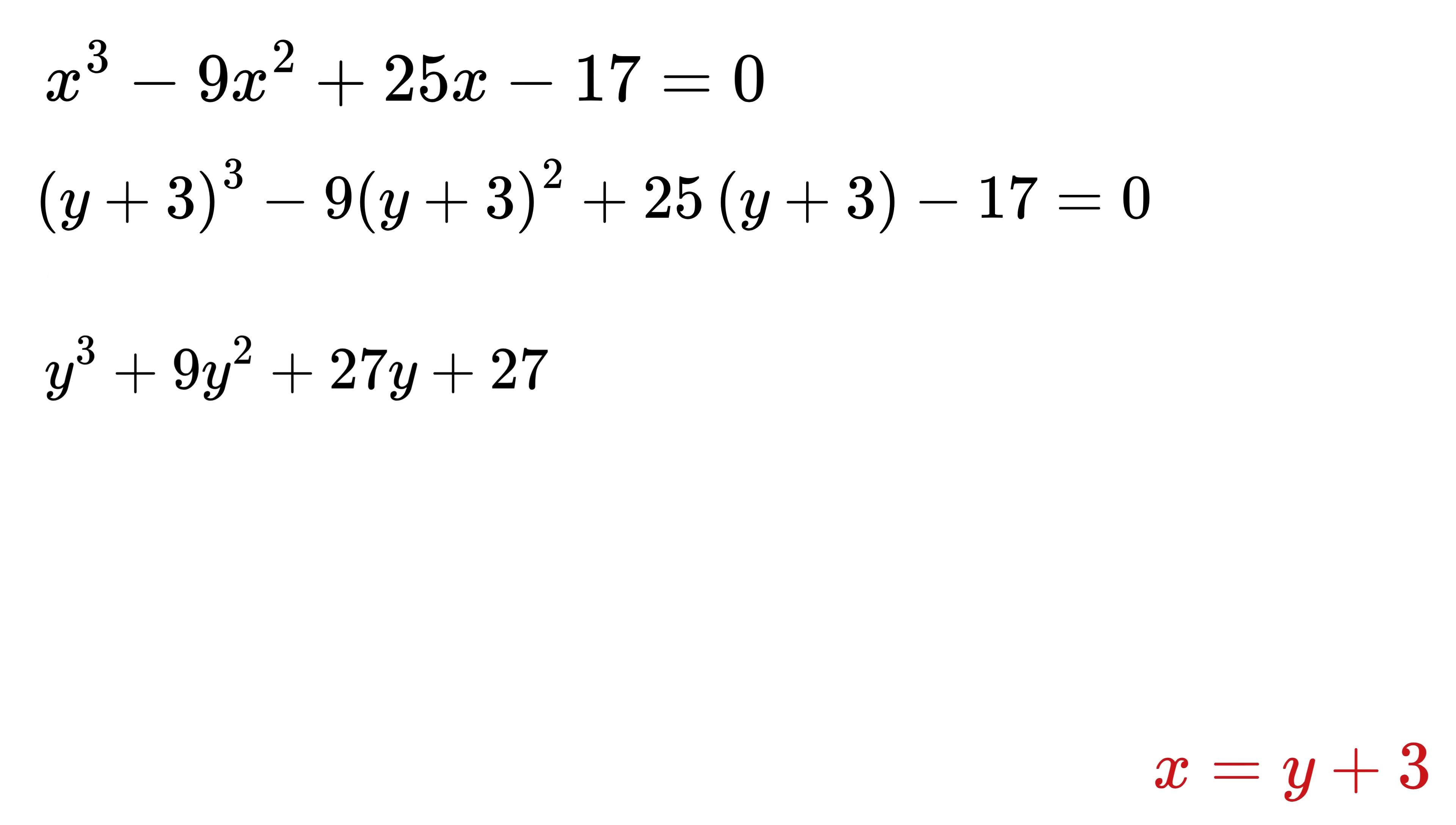Next we move to the second term, which is -9(y + 3)². Using the identity (a + b)² = a² + 2ab + b², we expand this to get y² + 6y + 9. Now multiplying this entire expression by -9 gives us -9y² - 54y - 81. Now for the third part, we have 25(y + 3), which becomes 25y + 75. And finally we bring down the last constant term, which is -17.